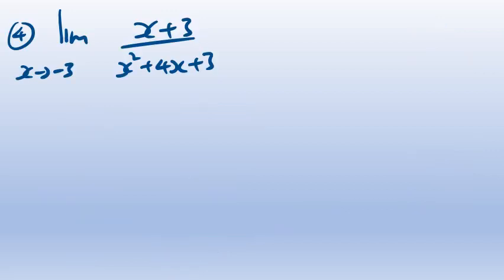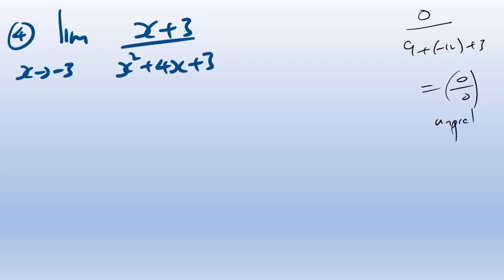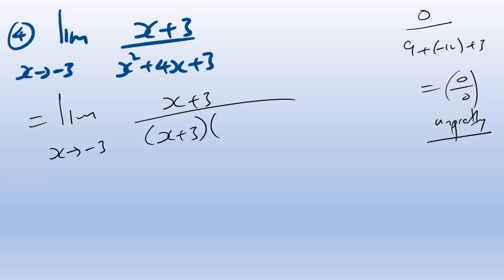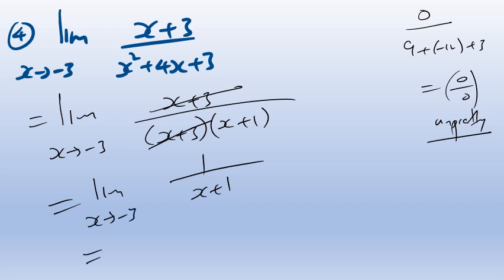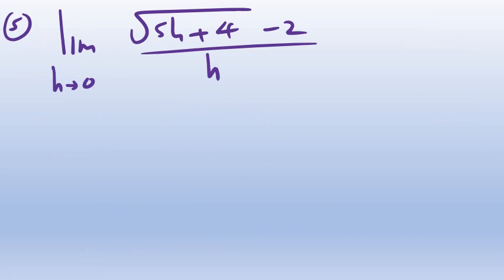Next one: direct substitution with x → −3 gives zero on top and (9 − 12 + 3) = 0 on the bottom — zero over zero, unpretty again. We look for factors. We want an (x + 3) to cancel. Factoring the denominator gives (x + 3)(x + 1), which cancels with the numerator. That leaves 1 over (x + 1) as x → −3, giving 1 over (−3 + 1) = 1 over −2, a beautiful minus one half.